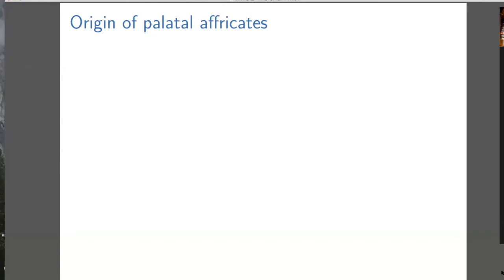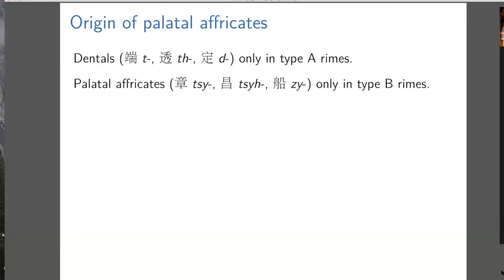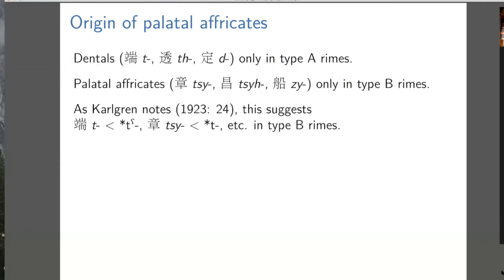Looking at the palatal affricates, dental stop initials only occur in type A rhymes, and the palatal affricates only occur in type B rhymes. So we can suggest that type B syllables are a conditioning environment for this palatalization, and we don't have to reconstruct palatal initials in Old Chinese. As a notational point, division three syllables in Baxter's system have some kind of Y or J in them.